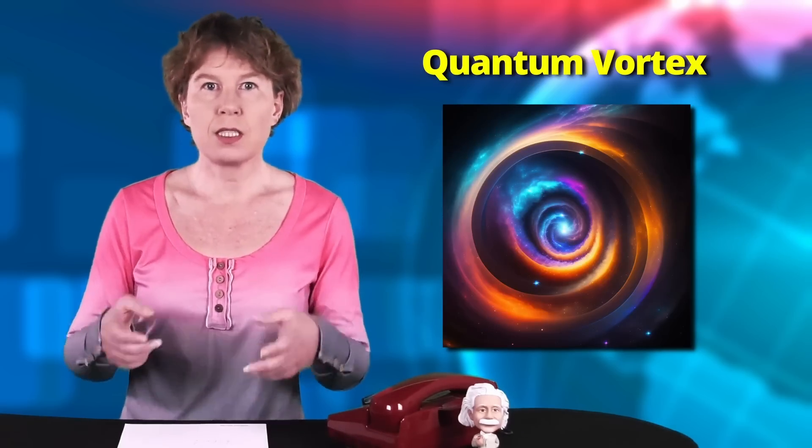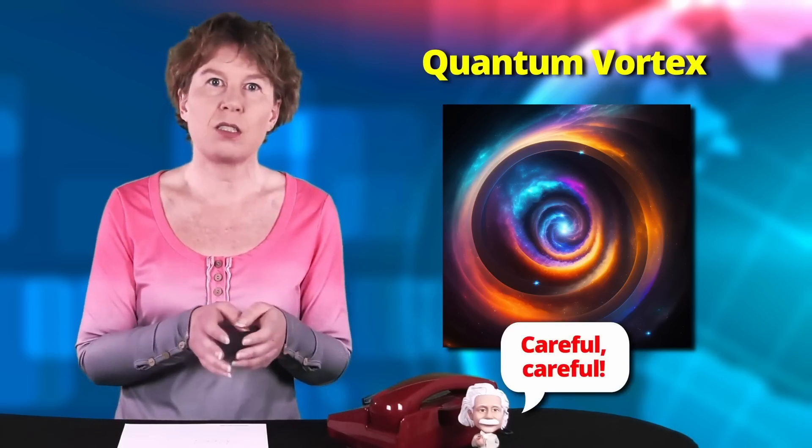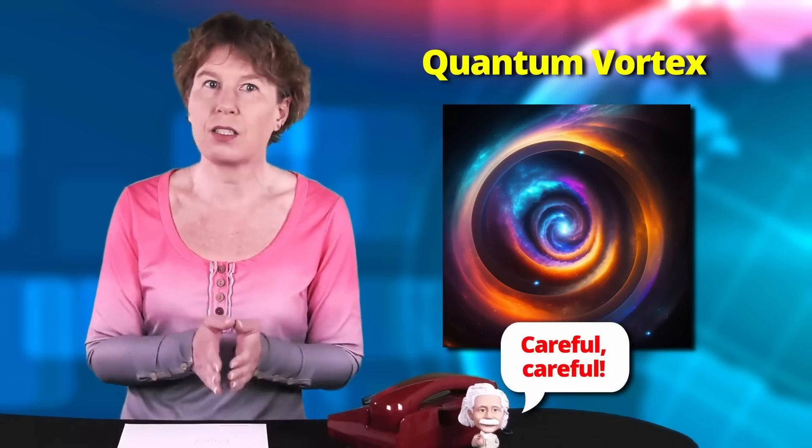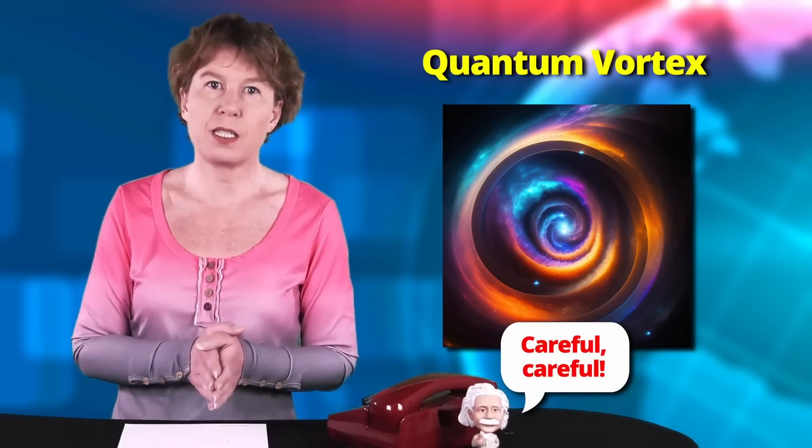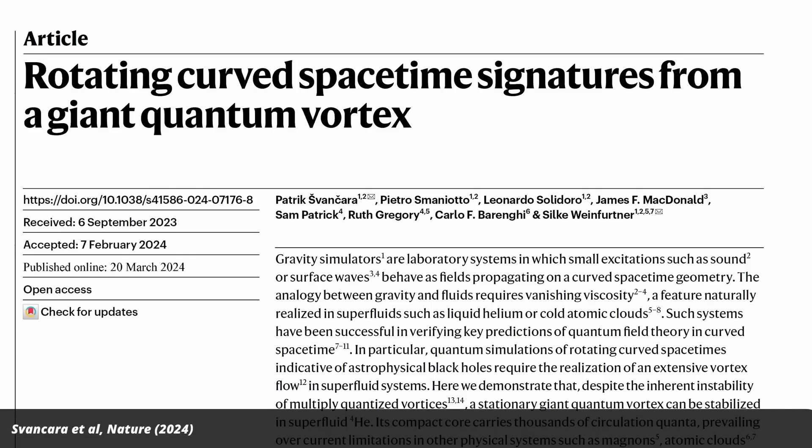To get a rotation going in a superfluid, you need to create a quantum vortex. This means you need to set the entire fluid into motion very, very carefully so it goes into a state of high angular momentum. That's the quantum version of rotation, basically. And they indeed managed to get it done.